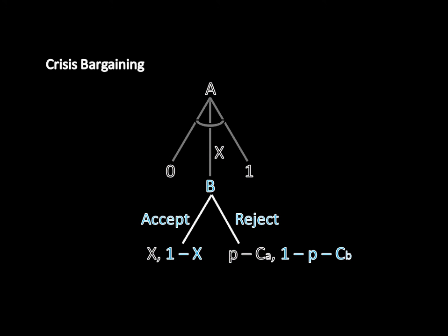Note that, to induce B to accept, A will have to make 1 minus X equal to 1 minus P minus CB. That follows from the trick with mathematical limits we used in the continuous version of the ultimatum game. We should also note that A doesn't really have incentive to give B any more than that, since that will only take away from A's final payoff.